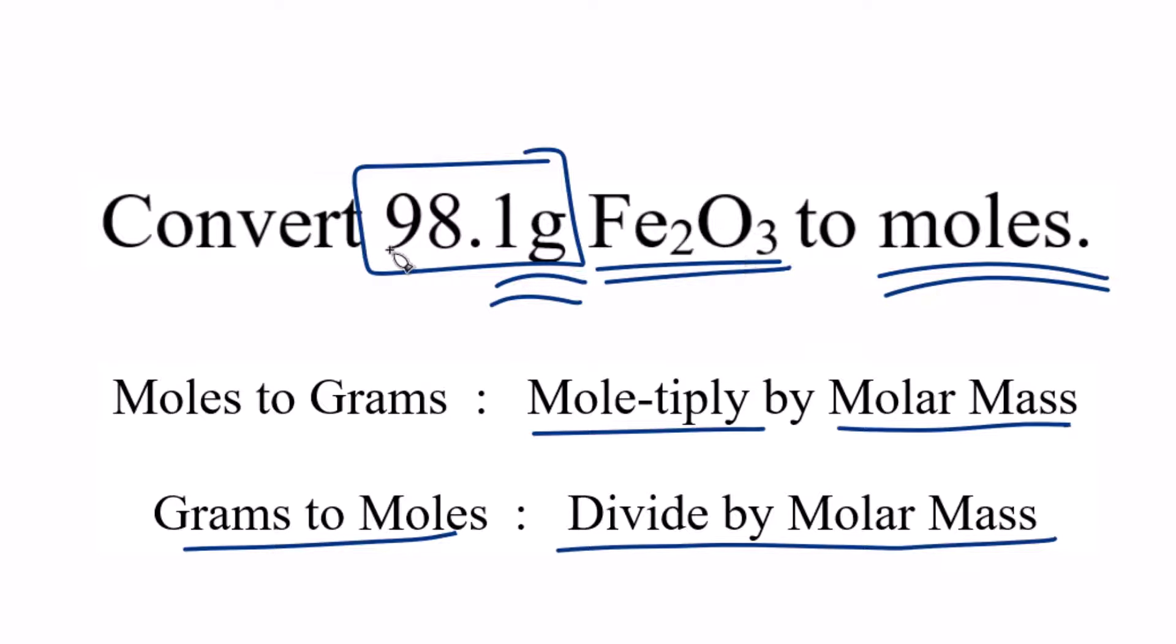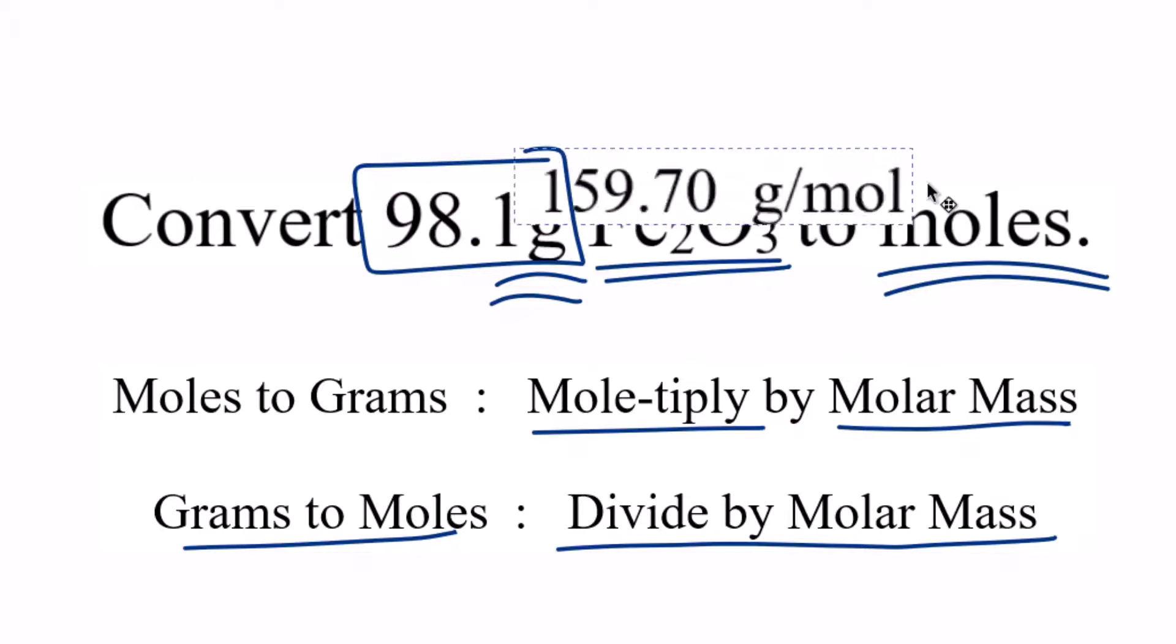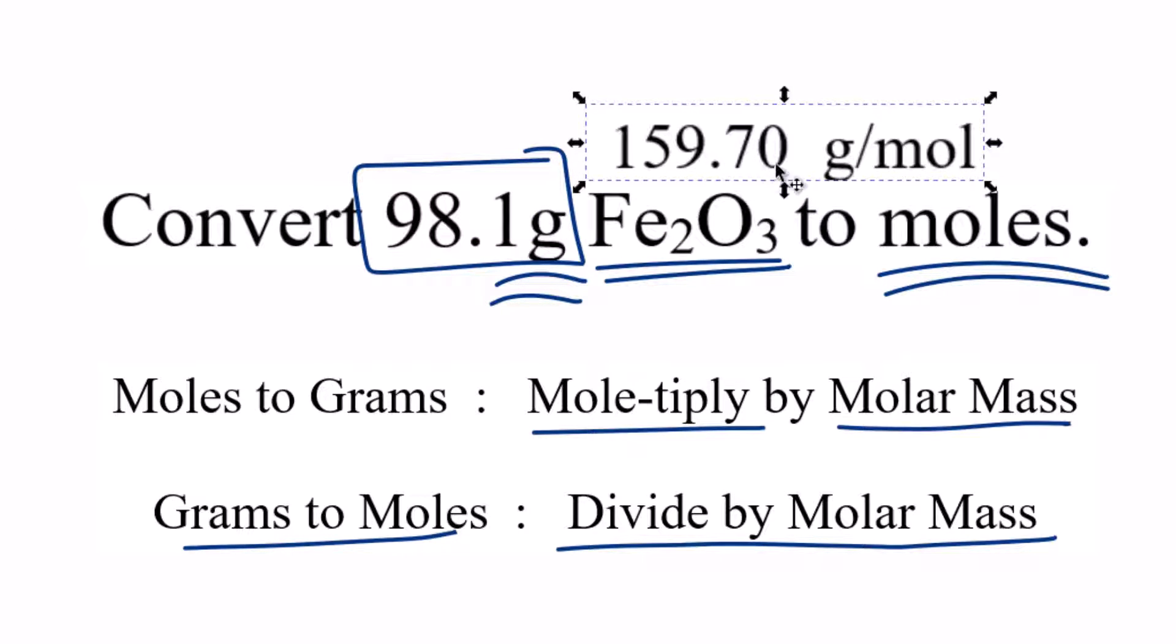So let's do that. We're going to take 98.1 grams, divide it by the molar mass of Fe2O3, which is 159.70 grams per mole. If you need help finding this, there's a link at the end of this video on how to find the molar mass for Fe2O3.